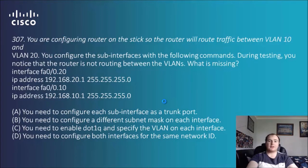The last question, 307: you are configuring a router on a stick so the router will route traffic between VLAN 10 and VLAN 12. Similar to before, you configure the sub-interfaces with the following commands. During testing, you notice that the router is not routing between the VLANs. What is missing?